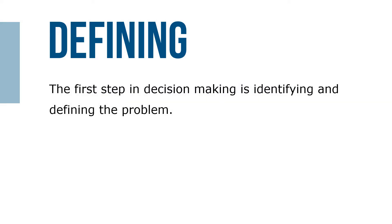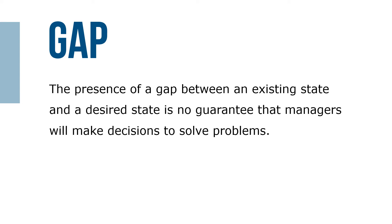The first step in decision-making is identifying and defining the problem. A problem exists when there is a gap between a desired state — what is wanted — and an existing state, the situation you are currently facing. However, the presence of a gap is no guarantee that managers will make decisions to solve problems; three things must occur for this to happen.